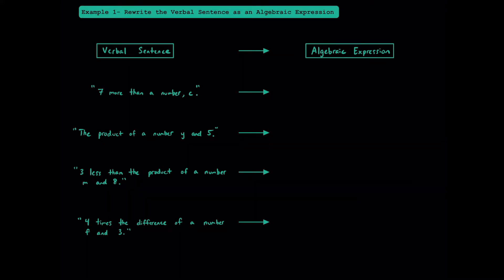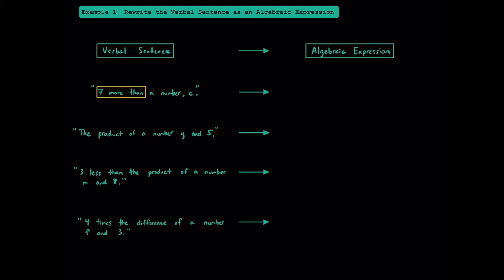In example 1, we're going to rewrite verbal sentences as algebraic expressions. This first one reads: 7 more than a number C. The key phrase here is '7 more than,' which means you're going to add 7 onto something. The only thing that makes sense is to add 7 onto this unknown number C. The algebraic expression is C plus 7. If we knew the values of C, or wanted to substitute in hypothetical values, we could then evaluate it.